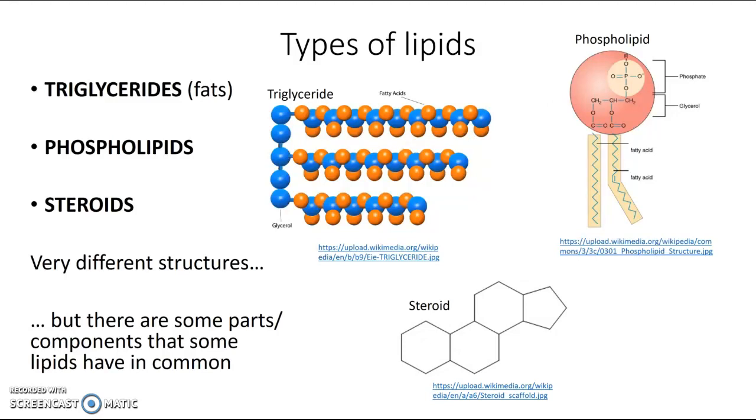But if you take a look, you'll notice that there are some parts that some of them have in common. So if you take a look at these diagrams up here and their labels, you might notice a couple of things that both of these molecules share. So one of them is a molecule called glycerol. So you see that here in the triglyceride and here in the phospholipid. And you may notice that the triglyceride and the phospholipid also both have fatty acids. So those are pretty important components of lipids, those glycerol and fatty acid molecules.